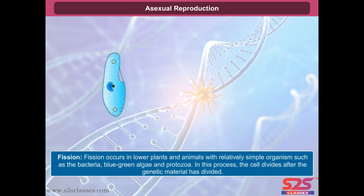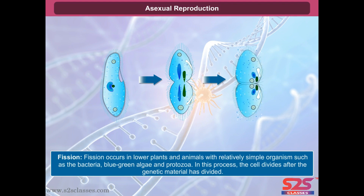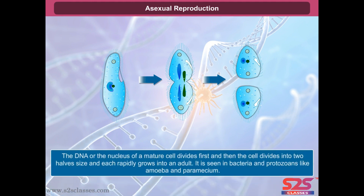Fission occurs in lower plants and animals with relatively simple organizations such as bacteria, blue-green algae and protozoa. In this process, the cell divides after the genetic material has divided. The DNA, or the nucleus of a mature cell, divides first, and then the cell divides into two halves, and each rapidly grows into an adult. It is seen in bacteria and protozoans like amoeba and paramecium.